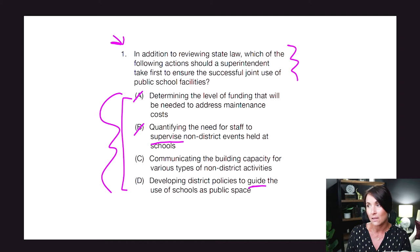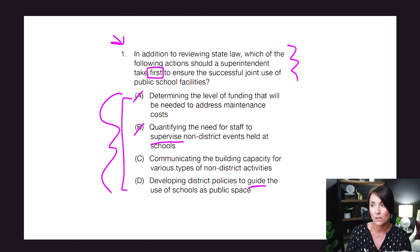In addition to reviewing state law, which of the following actions should the superintendent take first to ensure the successful joint use of public school facilities? Joint use means someone from outside the school or district is coming in to use your facilities — this could be a church, an organization, a team, all kinds of things. Remember, public schools are public spaces and the community has the right to rent them out and use them. You as the superintendent need to help your staff and district admin figure that out.